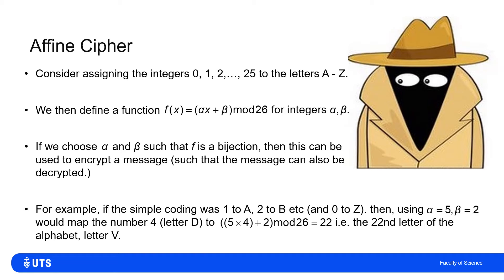Let's take the easiest possible encoding: call A=1, B=2, C=3, and then assign Z to 0. If I pick alpha=5 and beta=2, and my original message contained the letter D, that's the fourth letter, so input x=4. Then F(4) = 5×4 + 2 = 22, and 22 mod 26 is 22. The 22nd letter of the alphabet is V, so every time my original message contained D, my encoded message has V in the corresponding place.